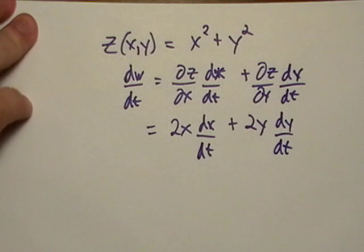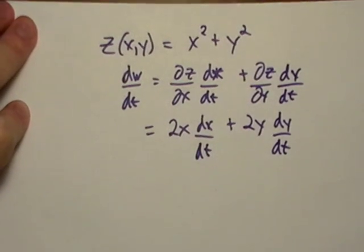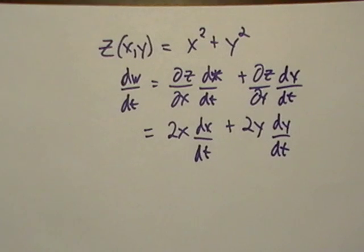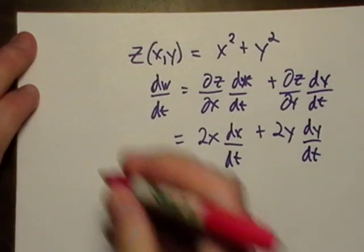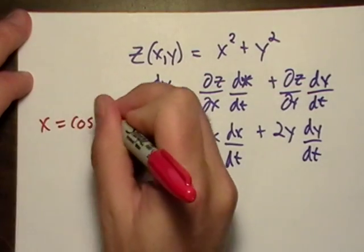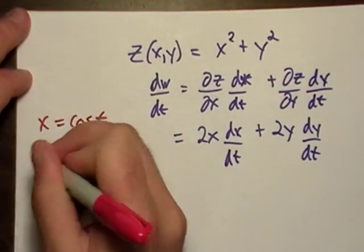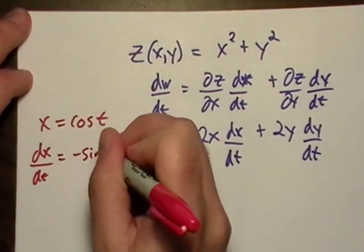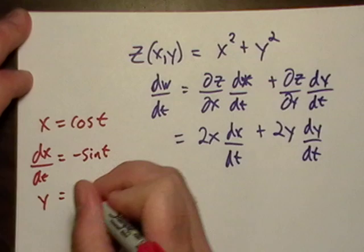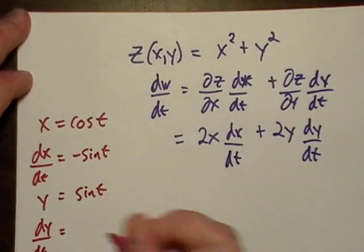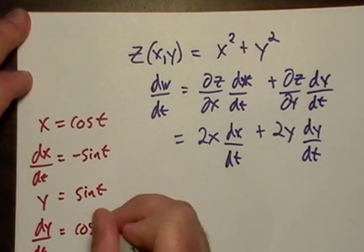So let's link everything together by means of the variable T. We'll just go back here. And X, that's just going to be equal to cosine T. DX DT, well, that's just going to be negative sine T. So Y, that's sine T. DY DT is equal to cosine T.